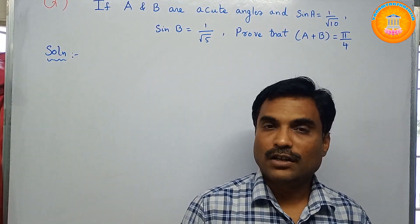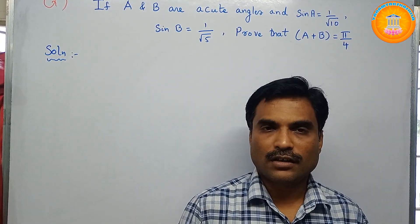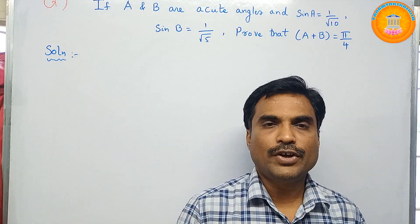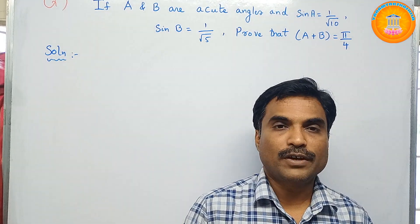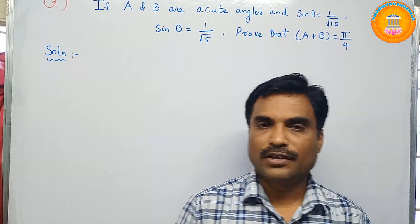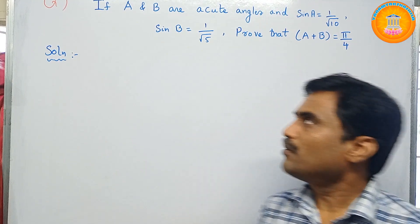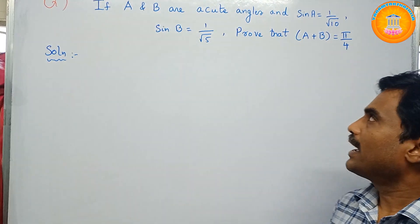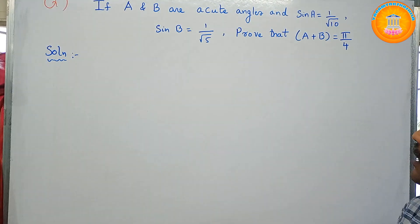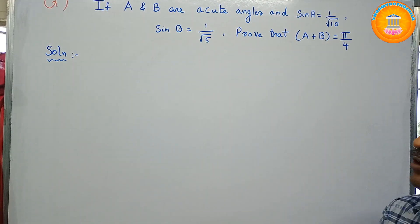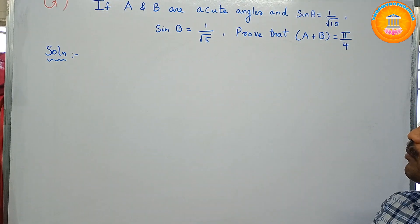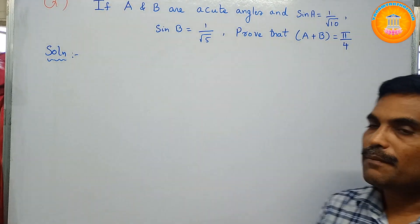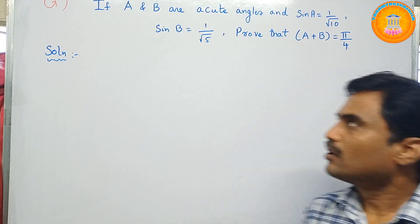Welcome to my channel Yanam Takshasila. In this new video I'm going to solve a mathematical problem under the topic trigonometry. The problem is: if A and B are acute angles and sin A = 1/√10, sin B = 1/√5, prove that A + B = π/4.